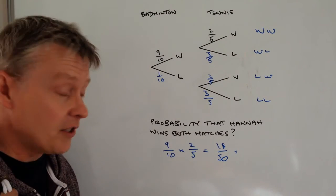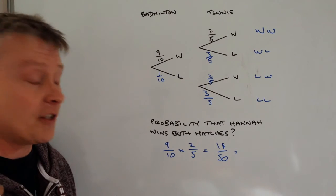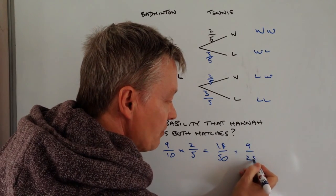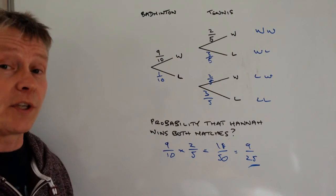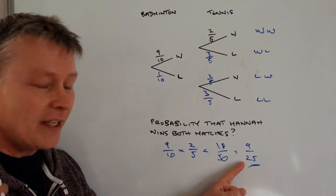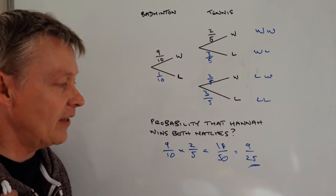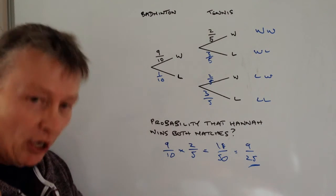Now that would answer the question, but it's really good practice when you're dealing with fractions to reduce that to the lowest possible values, which is nine out of 25. In other words, for every 25 games of badminton and tennis that Hannah plays, she wins nine times both games.